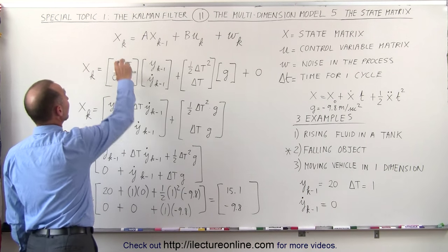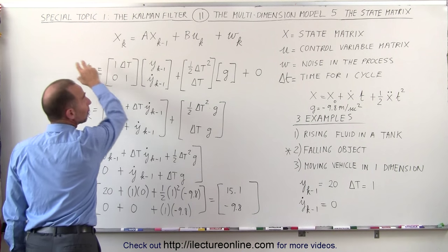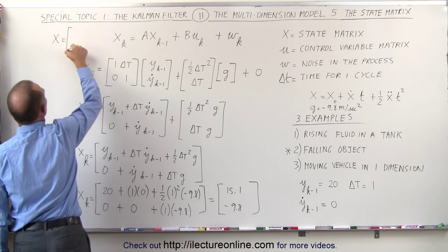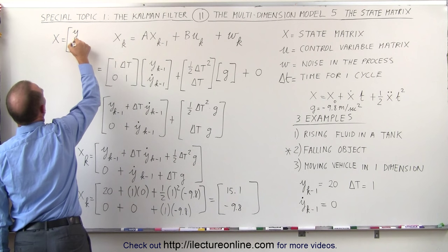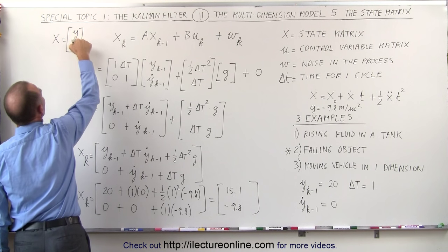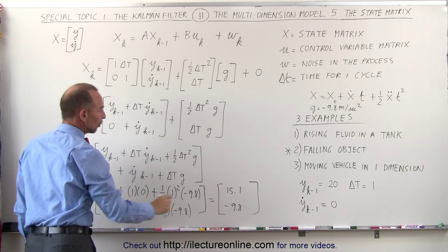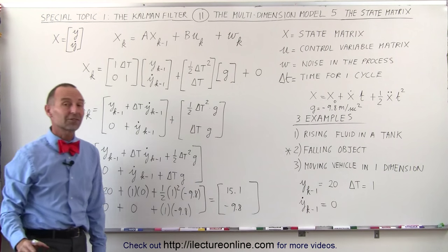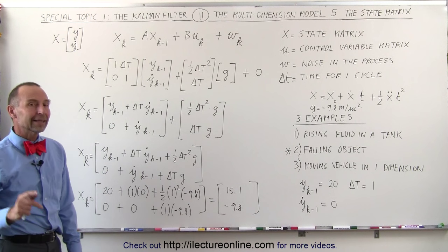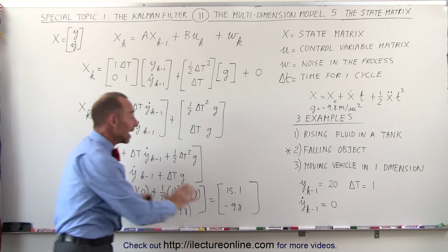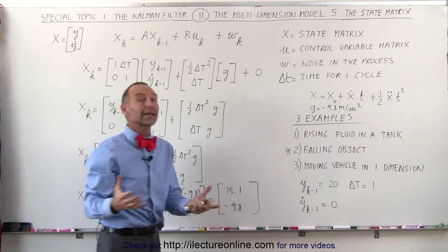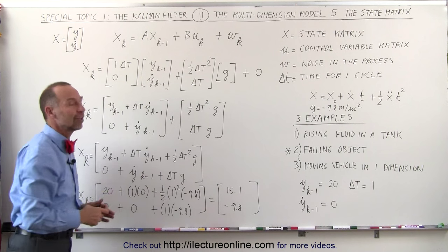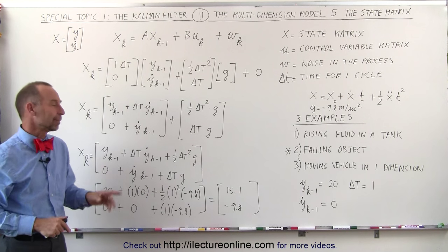Remember that the state matrix represents position and velocity. The state matrix was equal to y and y-dot, representing the position and velocity in the y direction. So the top row is the new position one second later, and the bottom row is the new velocity one second later. That is why we use matrices — matrices do exactly the same thing as what we would get from working out equations of kinematics, but with computers it's a lot easier to calculate using matrices rather than equations.